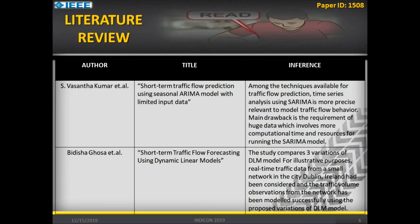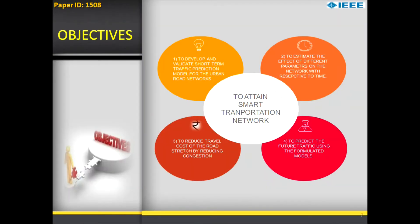These are the literature reviews. Our main objectives are: first, to develop and validate the models we developed; second, to estimate the effect of different parameters based on time; third, to reduce travel cost by reducing the time spent in congestion; and fourth, to predict future traffic using formulated models.